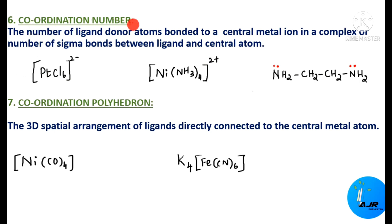Coordination number is the number of ligand donor atoms bonded to a central metal ion in a complex, or the number of sigma bonds between the ligand and the central atom. It is not simply the number of ligands attached. Counting ligands works only for monodentate ligands, where there is only one coordinate bond per ligand. For didentate or polydentate ligands, we must count the number of ligand donor atoms bonded to the central metal ion.